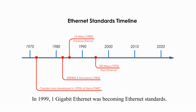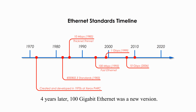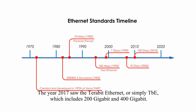In 1999, 1 gigabit Ethernet became an Ethernet standard. In 2006, 10 gigabit Ethernet was hitting the market for fiber transmission. Just 4 years later, 100 gigabit Ethernet was the new version. The year 2017 saw terabit Ethernet, or simply TBE, which includes 200 gigabit and 400 gigabit.